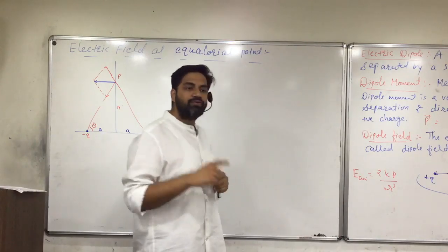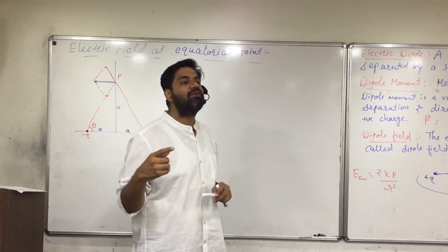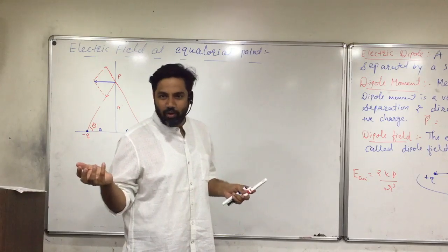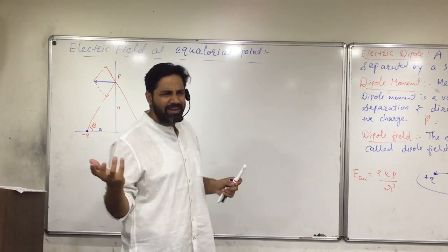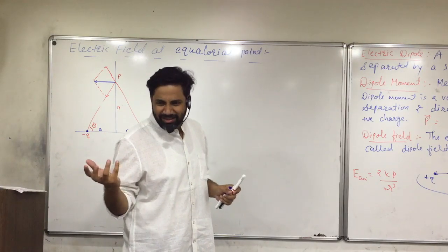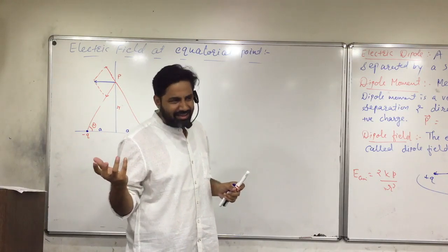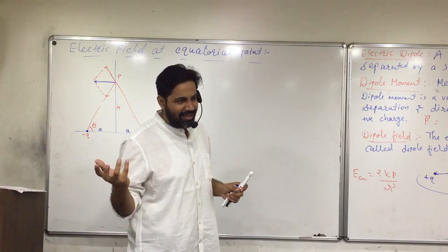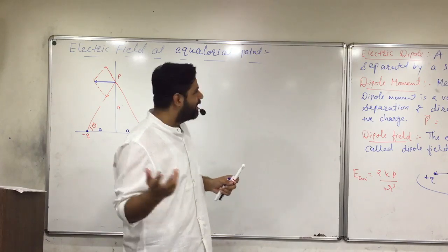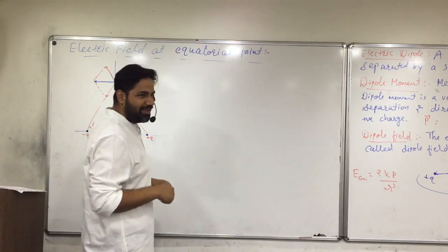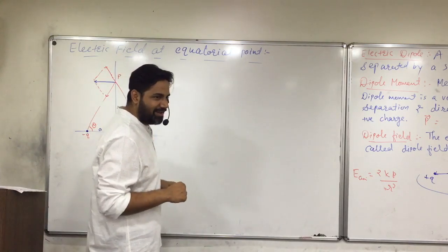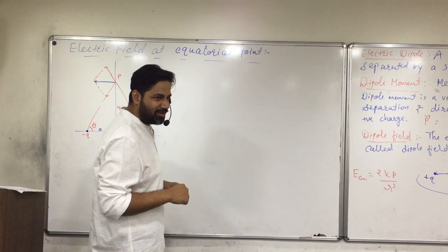Now I am going to find out the value of E equatorial. For the equatorial point, we consider the equatorial line of the dipole.